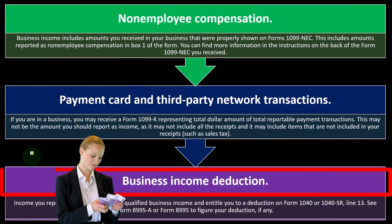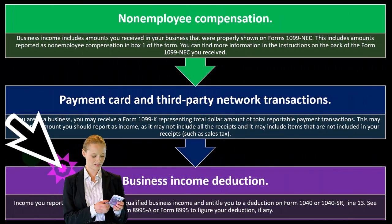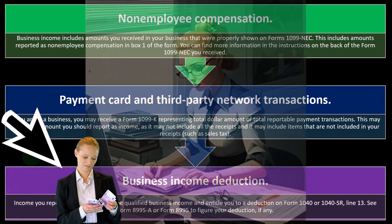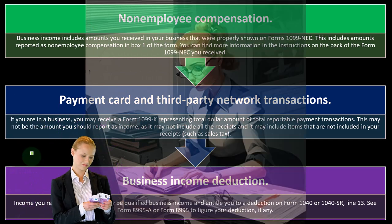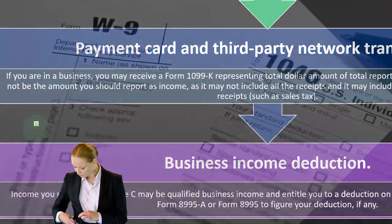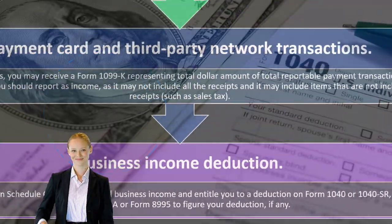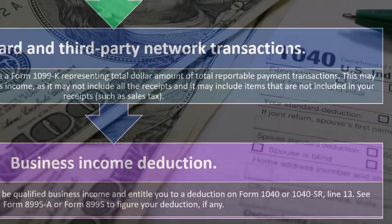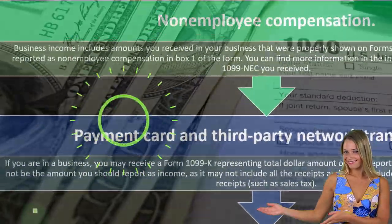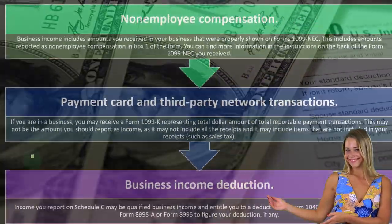Business income deduction: income you report on Schedule C may be qualified business income and entitle you to a deduction on Form 1040 or 1040-SR line 13, using Form 8995-A or Form 8995 to figure your deduction, if any.